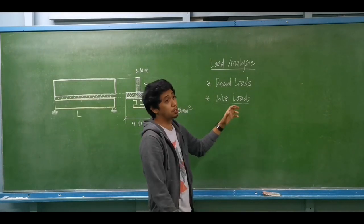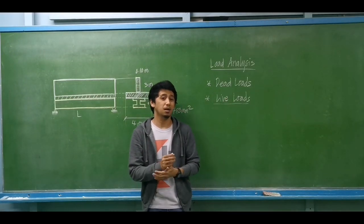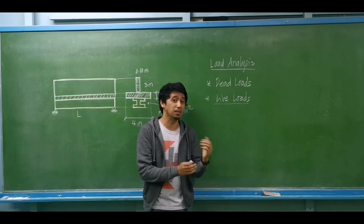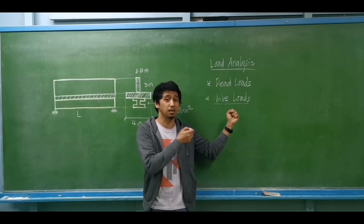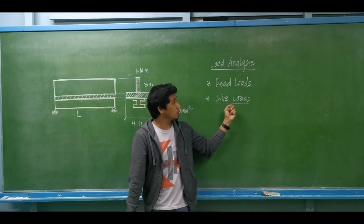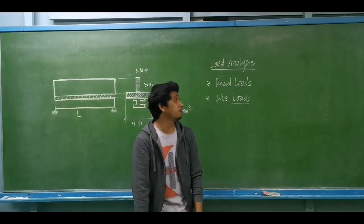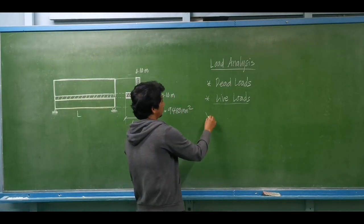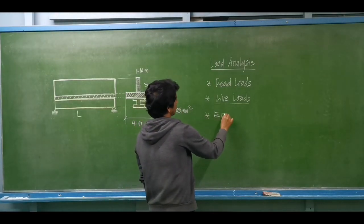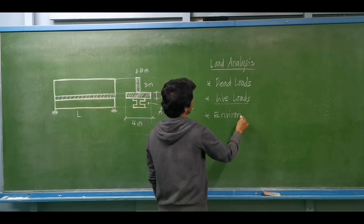Anything that is not permanent in that structure is a live load. For example, office workers — most of the time at night they are not in that building. That is our example of live loads. Then we have the third type: environmental loads.